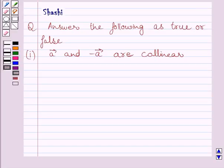Hi and welcome to the session. I am Shashi and I am going to help you with the following question. Answer the following as true or false: A vector and minus A vector are collinear.